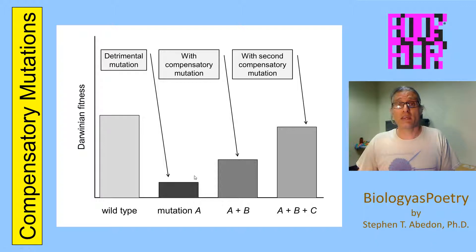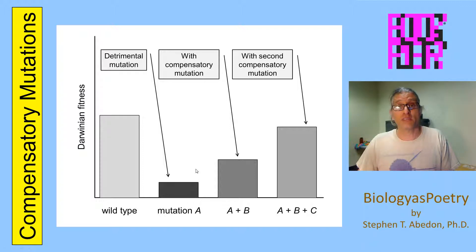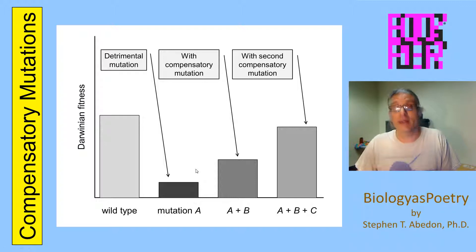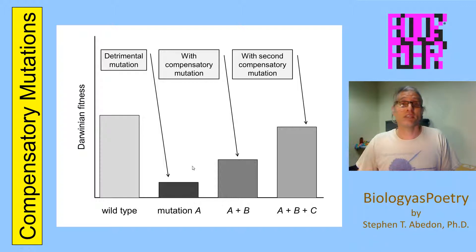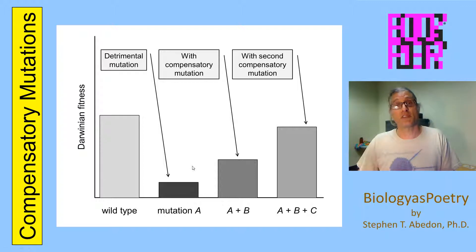Compensatory mutations can be an important means by which organisms are able to recover from having detrimental mutations, and may very well serve as a means by which organisms can move from one adaptive peak to another, such that an initial detrimental mutation takes them to a lower fitness level, but they may then be able to climb up to some alternative adaptation.